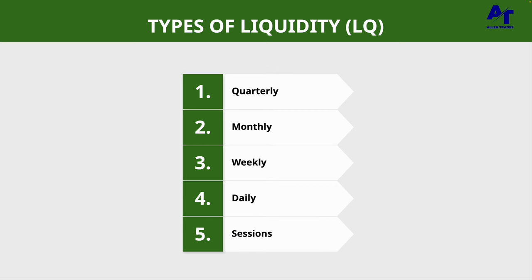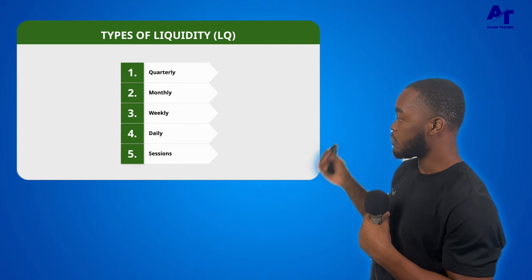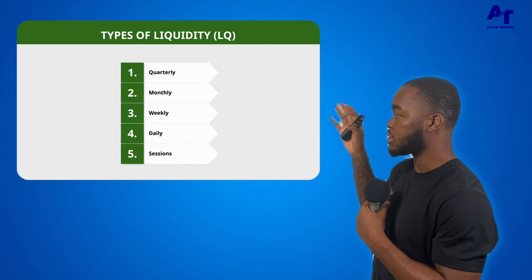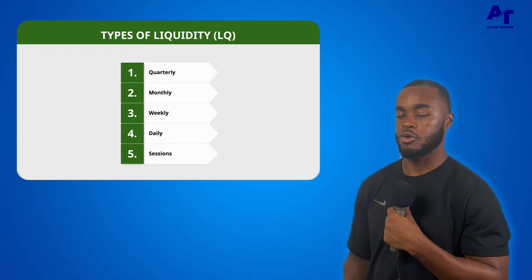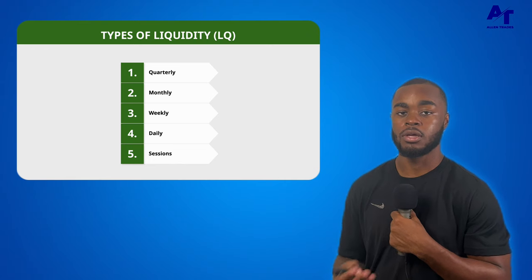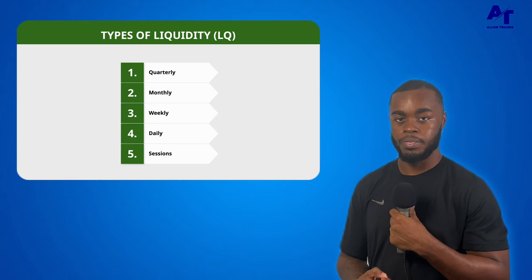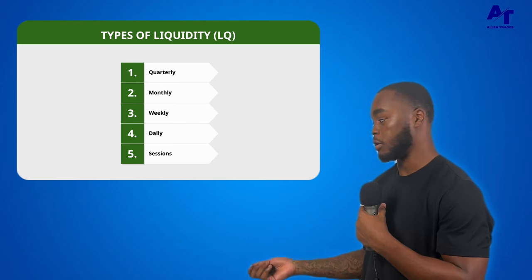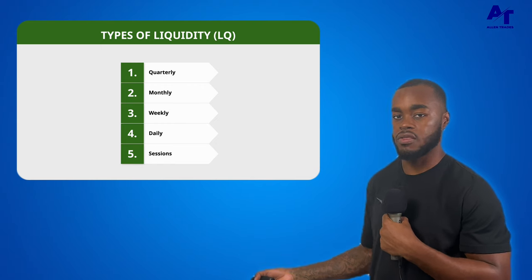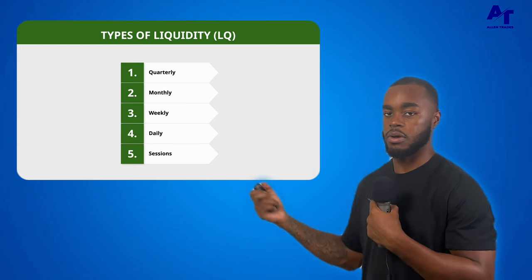Lastly, we have session liquidities — the highs and lows within those specific kill zones. The higher the liquidity level, working from quarterly down to session, the stronger the liquidity, because large funds and institutions are trading off of quarterly, monthly, and sometimes daily liquidity — not session liquidities. So there's more money there. The algorithm will really seek those liquidities, but because they're quarterly or monthly, it will take longer to reach them versus session liquidities, which is why I like scalping.